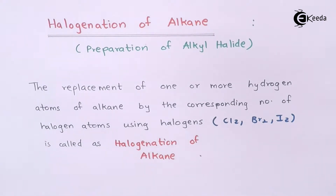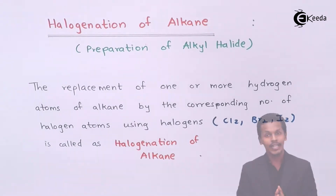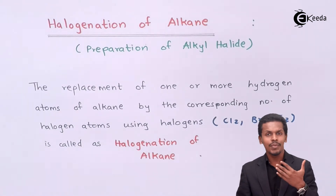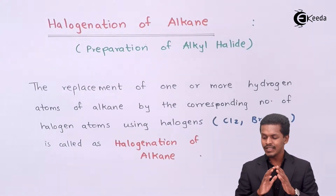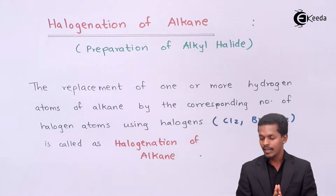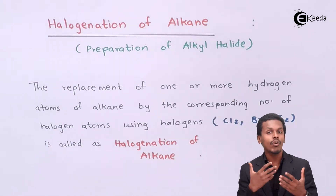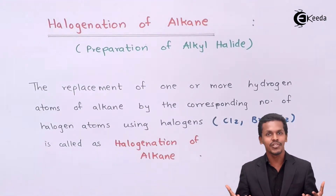We have discussed Cl2, Br2, and I2, which means we are going to talk about chlorination, bromination, and iodination. There are different criteria for each, and we could get a particular alkyl halide — alkyl chloride, alkyl bromide, or alkyl iodide. Let us first understand the general reaction of halogenation of alkanes, and then we could talk about chlorination, bromination, and iodination individually.